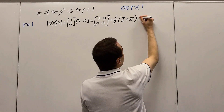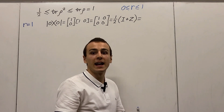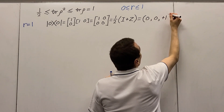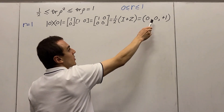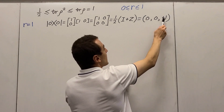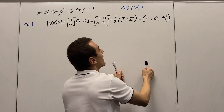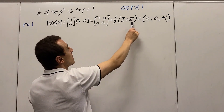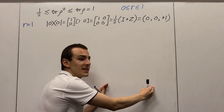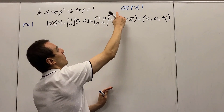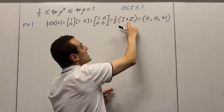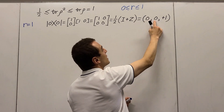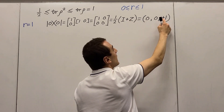Another way we can write this is as a set of X, Y, Z coordinates in a Cartesian coordinate system, which gives us (0, 0, +1). These coordinate values are the coefficients that multiply the Pauli matrices when we write the density matrix out in full. In general, the density matrix can be written as one half times the identity plus a linear combination of all three Pauli matrices, with X, Y, Z as the coefficients. Pauli X and Pauli Y do not appear here because their coefficients are zero, but Pauli Z appears with coefficient plus one.